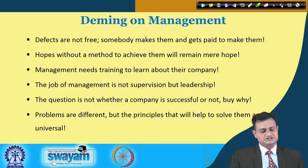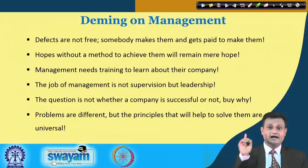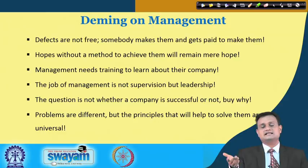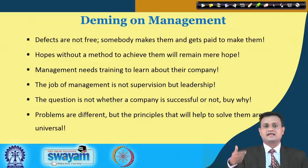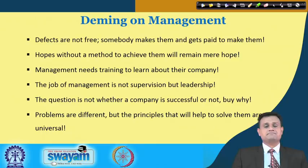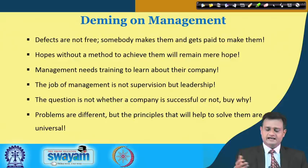The question is not whether a company is successful or not, but why. The Deming approach has benefited many organizations across the world — it is important to dig out the reason why a company has achieved a certain standard, and that reason can be replicated. Problems are different, but the principles that help solve them are universal. The philosophies of TQM form a bigger gamut applicable to manufacturing, service, or any scale of organization.